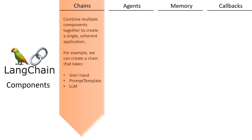Chains allow us to combine multiple components together to create a single, coherent application. For example, we can create a chain that takes user input, formats it with a prompt template, and then passes the formatted input to an LLM. We can build more complex chains by combining multiple chains together, or by combining chains with other components.